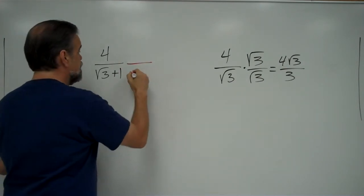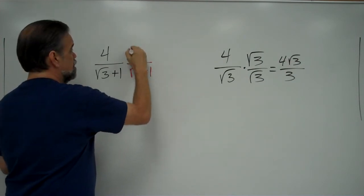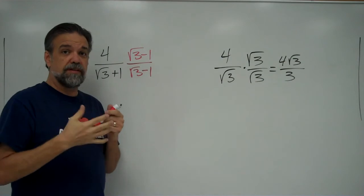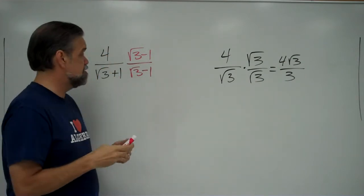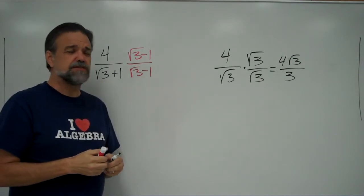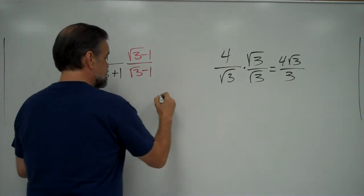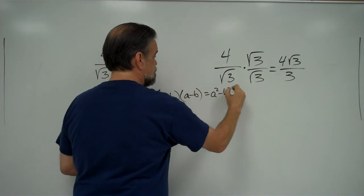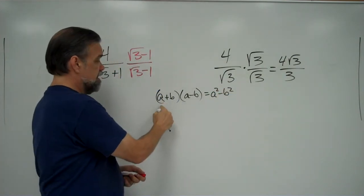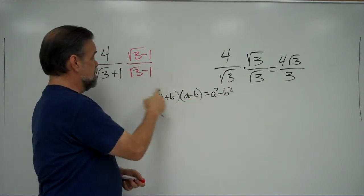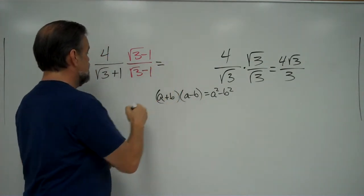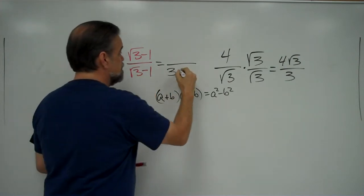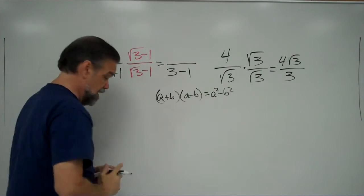What we're going to do is multiply by the square root of 3 minus 1 over itself. As long as we're multiplying by something over itself, we're multiplying by 1 and therefore not changing the value. Why did I choose the square root of 3 minus 1? It's because, as we've seen before, if you take a plus b and multiply it by a minus b, you get a squared minus b squared — the difference of squares. Here a plus b is the square root of 3 plus 1, and a minus b is the square root of 3 minus 1. Multiplying those gives the square root of 3 squared — which is 3 — minus 1 squared, which is 1. That gives us a rational denominator.